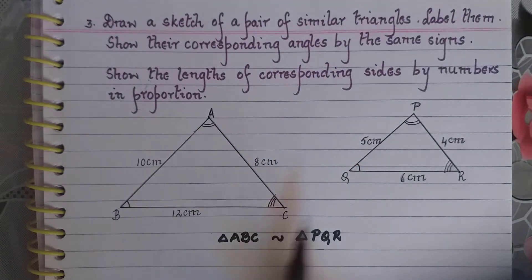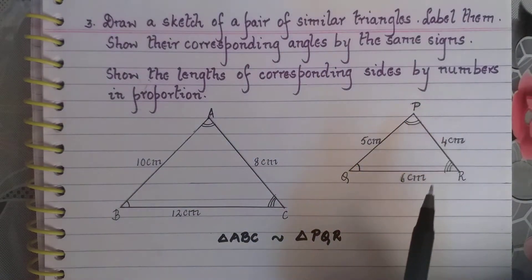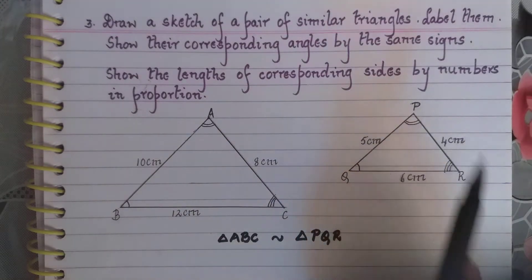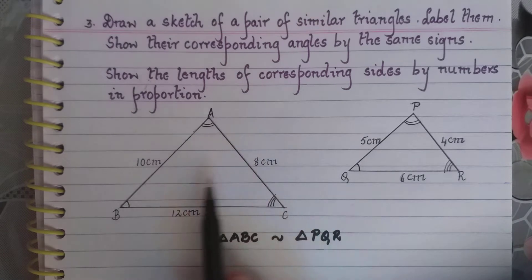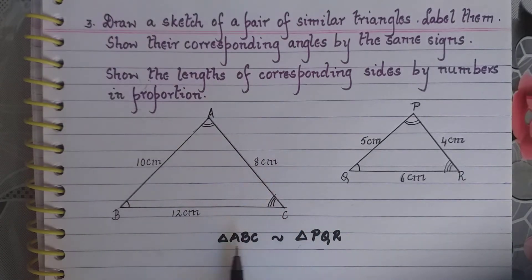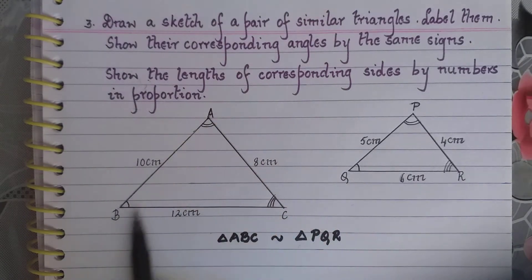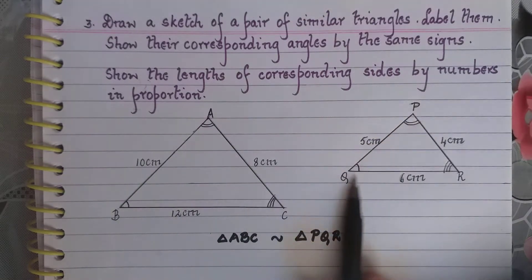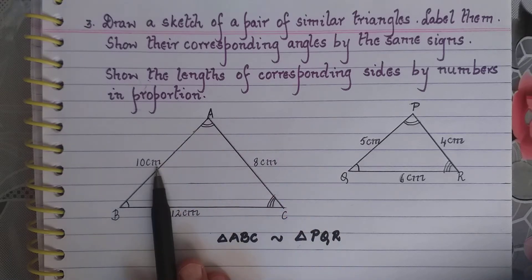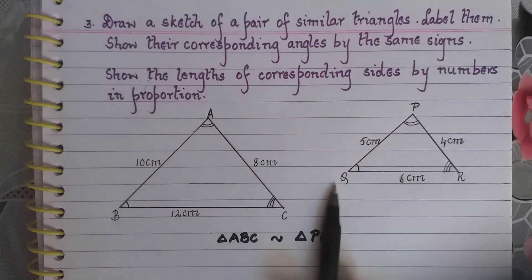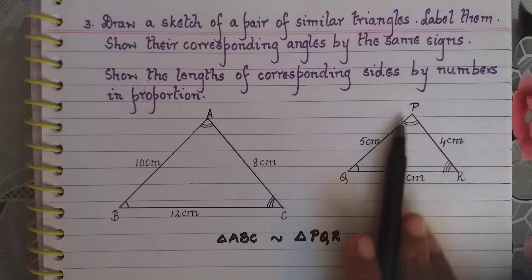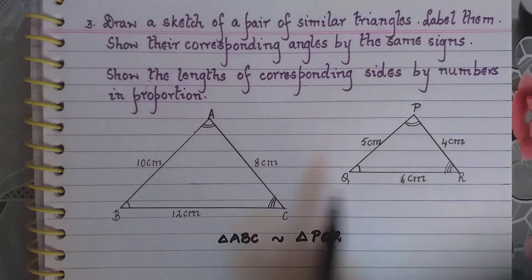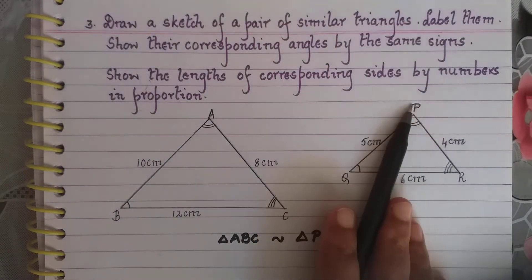Okay, so now we will see. I have taken a rough figure. I have drawn triangle ABC and triangle PQR. If you see here, I have taken side AB to be 10 cm and side PQ is 5 cm. So if they are corresponding, AB upon PQ should equal BC upon QR should equal AC upon PR.